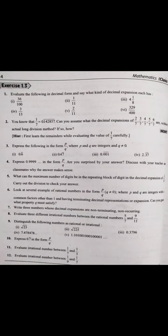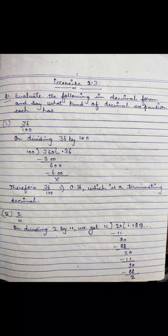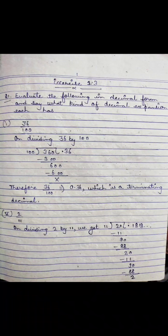Now we look at the first part of question 1: 36 upon 100. We first need to convert it to decimal form and then tell what kind of decimal expansion it is. When we divide 36 by 100, the answer is 0.36. The remainder is 0, which means this is a terminating decimal expansion. So the decimal form is 0.36 and the decimal expansion is terminating.